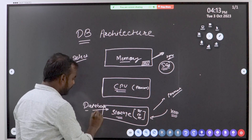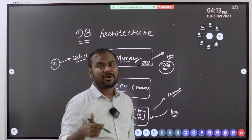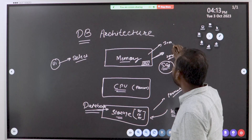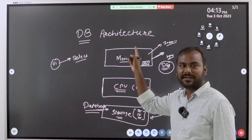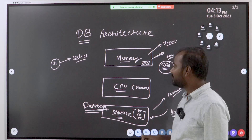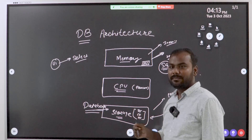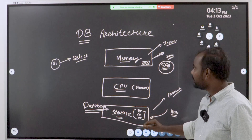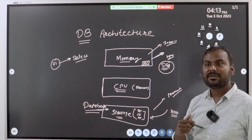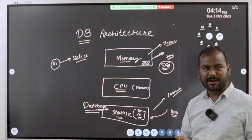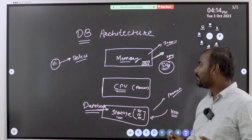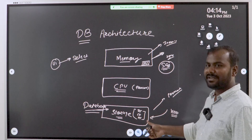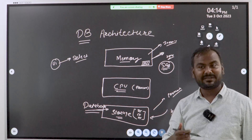In the next lecture we will talk about how this memory — there is a terminology called instance, or database instance — and how this instance and database are connected to each other. To summarize: whenever you want to install a new database, there are three components to take care of — memory, CPU, and storage. Good memory improves database performance, a higher CPU like an i7 gives better performance than an i3, and storage determines how much data you can store, and both memory and storage can be increased as needed.